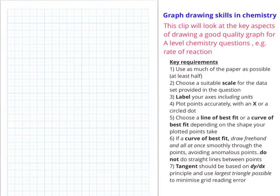If you need to do a tangent, for example, to work out the gradient at a certain point on your curve of best fit, you do the tangent using the dy over dx principle. Therefore, to minimize grid reading error, you use the largest triangle possible within your graph axes.